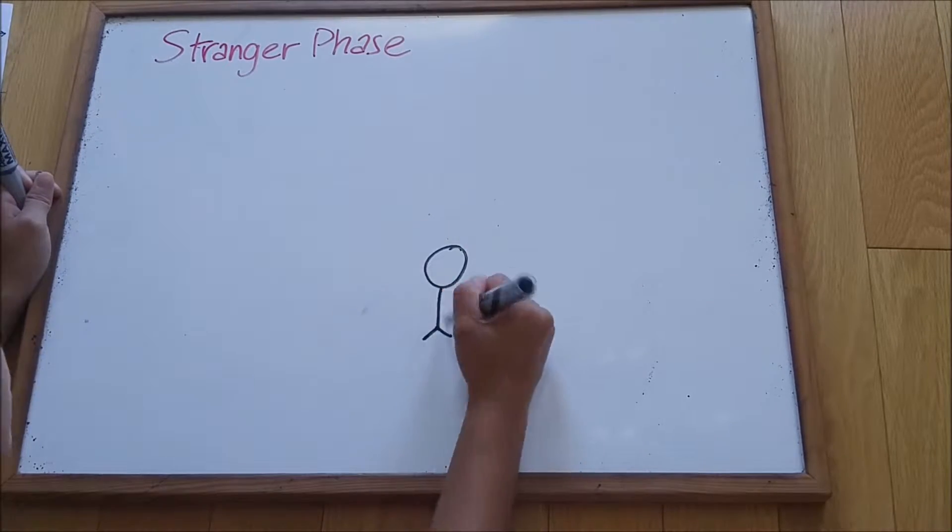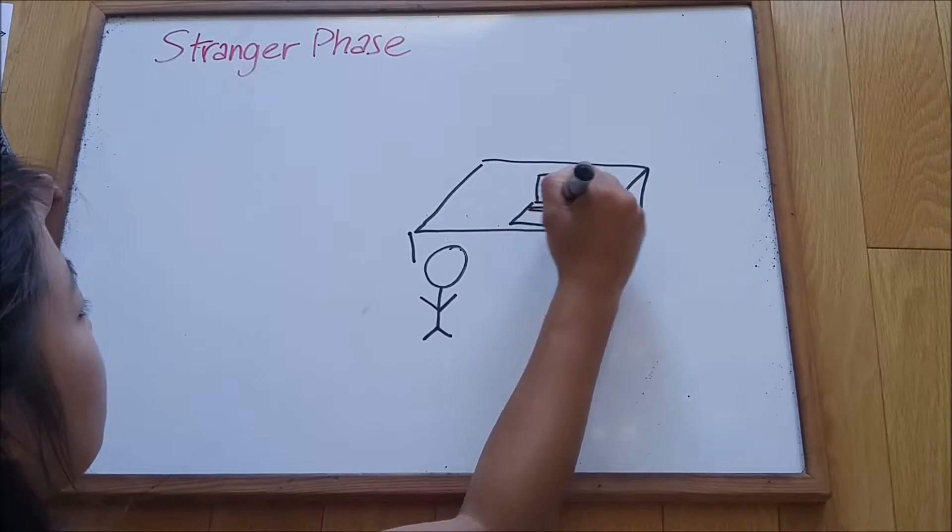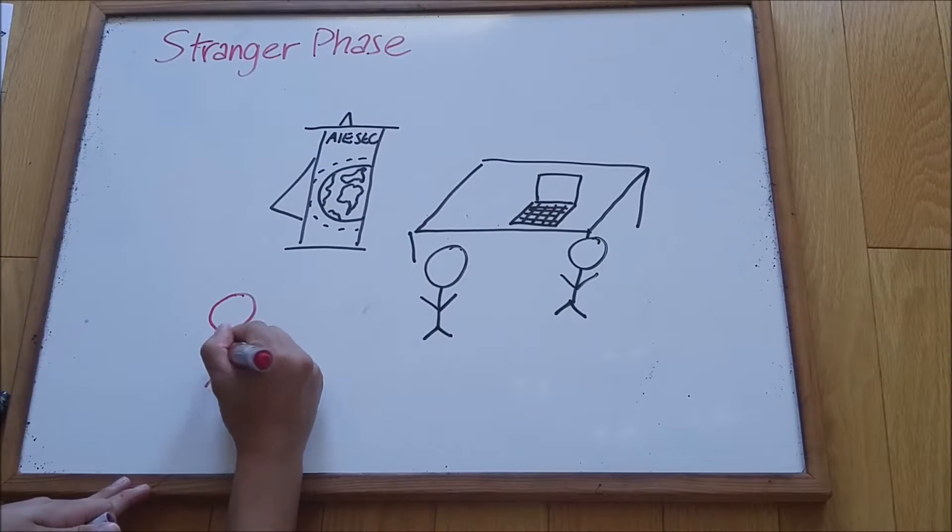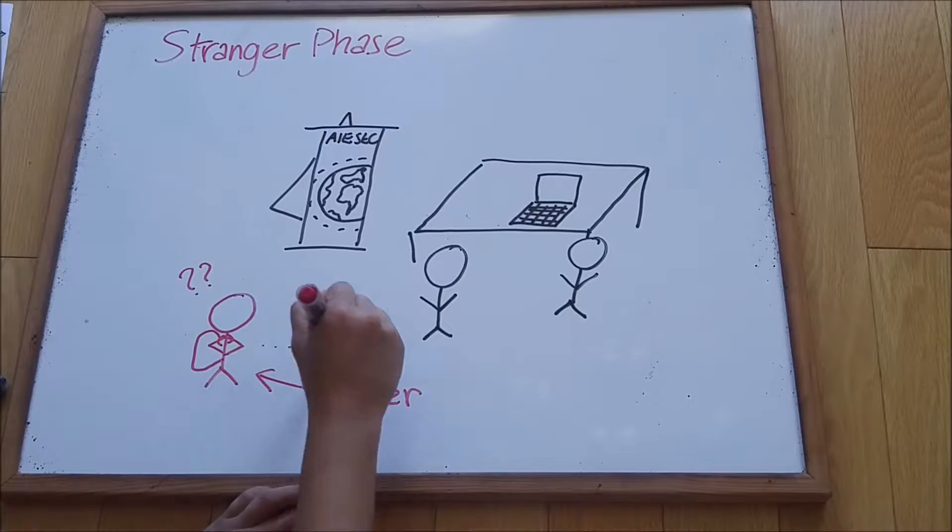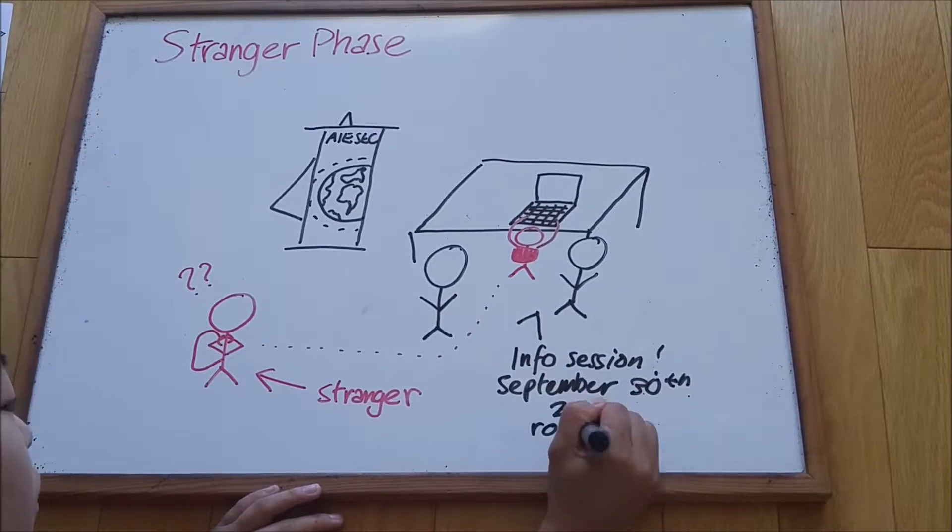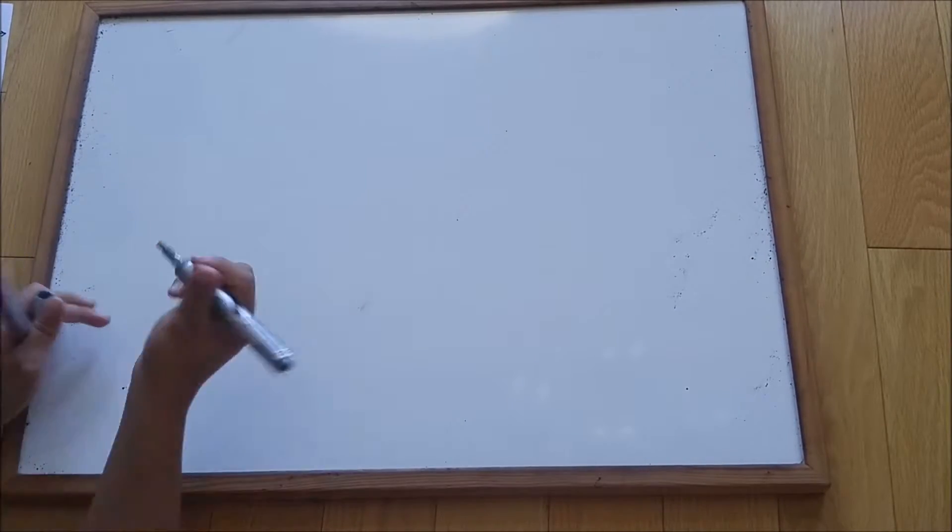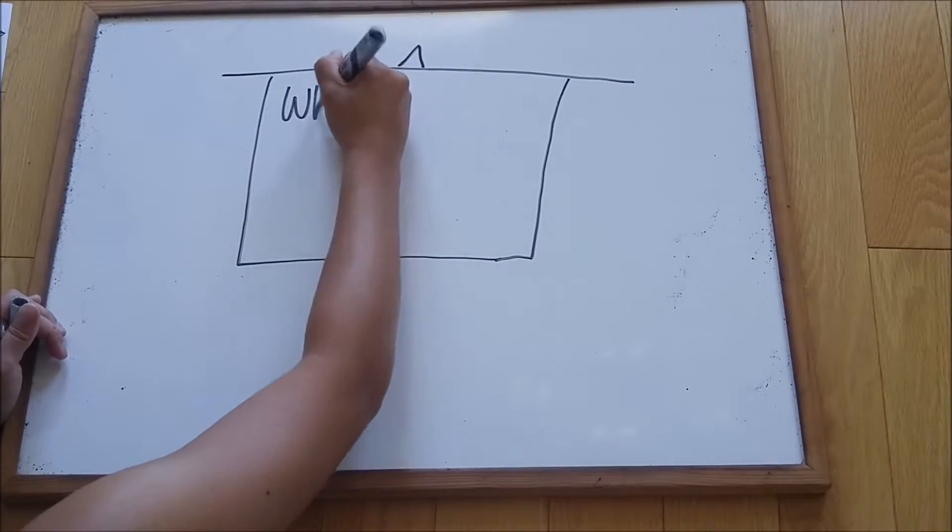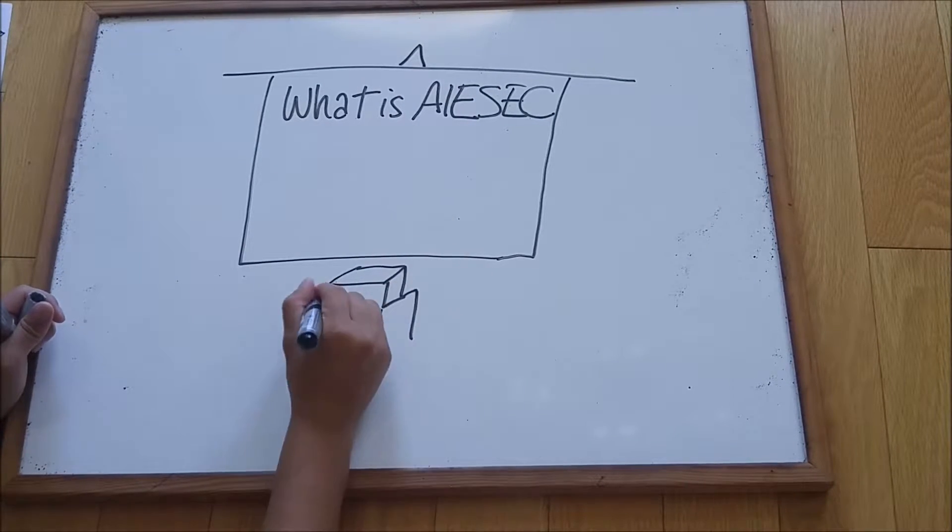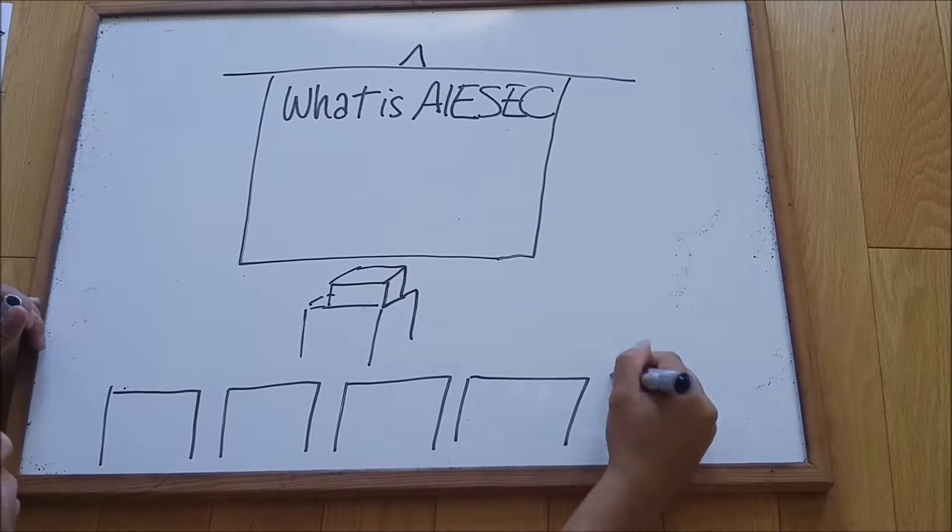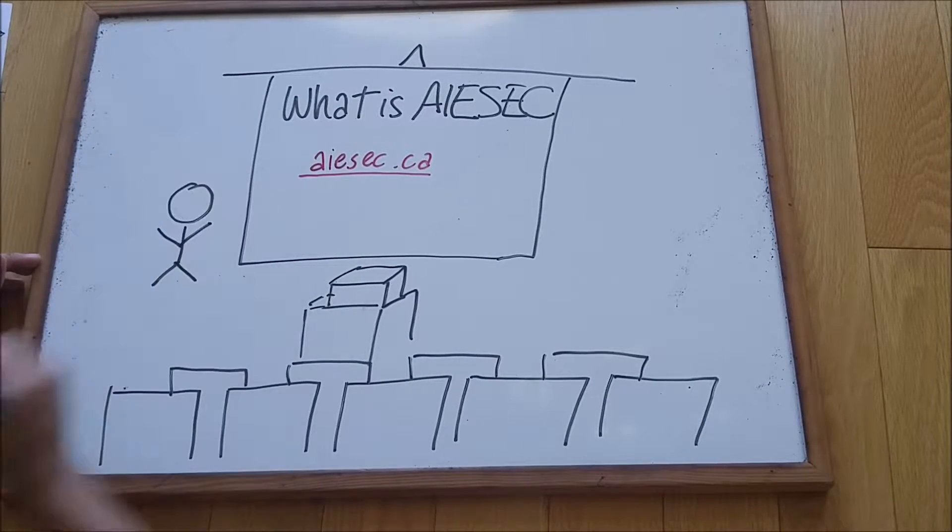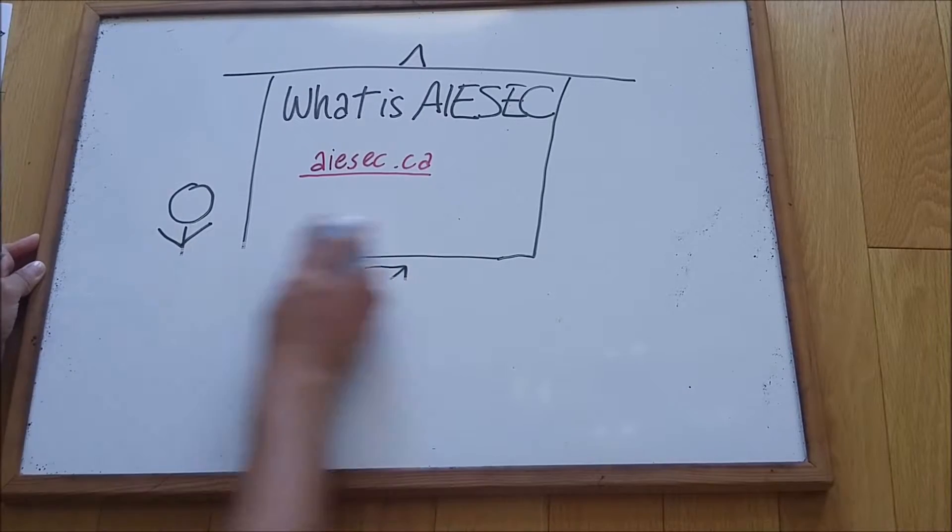The first stage is when the student approaches one of your boothing tables at school. I'm going to draw a stranger who's going to approach the table and fill in his info into the Google Doc and learns about your info session. When the stranger attends your info session, this is really your chance to give them the link of aiesec.ca so they can register and that's how they get into Salesforce. The MC is no longer doing that, we're going to be doing that for them.